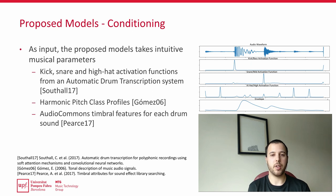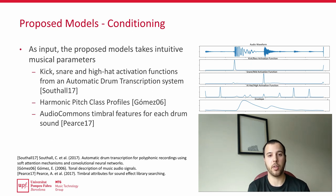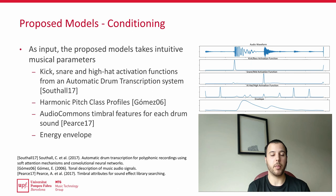To describe the timbre of each drum sound, we use the Audio Commons timbre features. These are boominess, sharpness, depth, hardness, brightness, roughness, and warmth. Finally, in some of the models, we use the energy envelope in a similar manner as used in NeuroDrum.